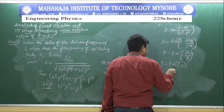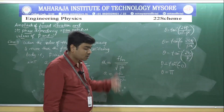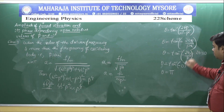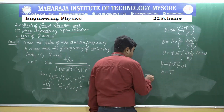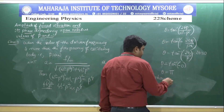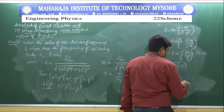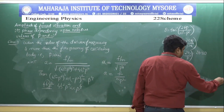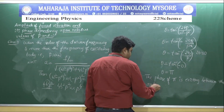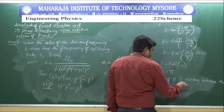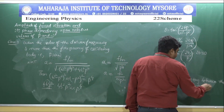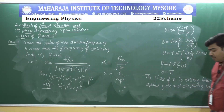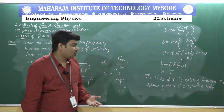Since the value of p is very large compared to b, 2b/p is nearly equal to zero, so theta equals tan inverse of minus zero, giving theta equals pi. This means there exists a phase difference of pi — that is, 180 degrees — between the applied force and the oscillating body.